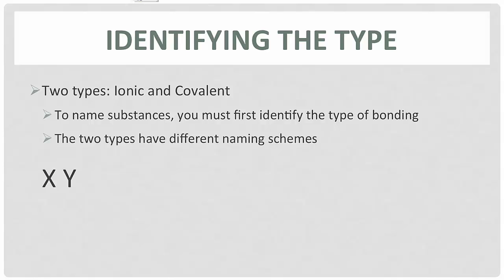Here's some kind of binary thing made of an X and a Y. X might be a cation, it might be a metal, you don't know. Y might be an anion, it might be a polyatomic anion, we don't know. If X and Y are both nonmetals, then the bonding is covalent, pretty simple.